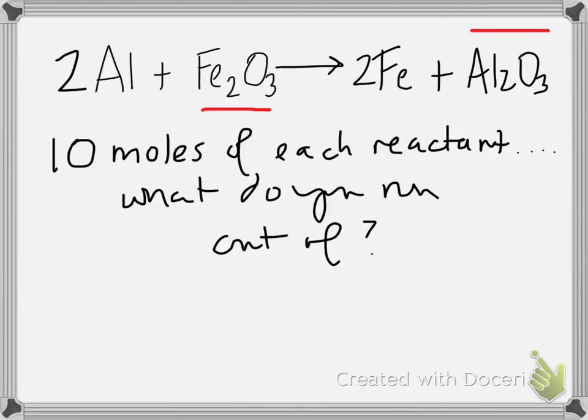Here is my biggest tip for you — circle this, highlight it, write it in orange, tattoo it on your inner arm. When you're doing limiting and excess reactant, you are always comparing reactants. That seems obvious and intuitive, but every year I have somebody on a test do a factor label that starts with a reactant and ends with a product. This is all about a comparison between the two reactants. Therefore your factor label is going to involve two reactants. You can start with either reactant — it does not matter which reactant you start with. You can start with one and run it the other way. But you always go reactant to reactant.